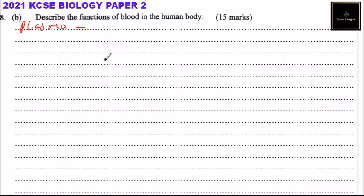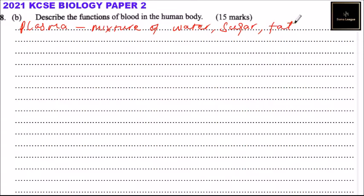Plasma is the liquid component of blood. It is a mixture of water, sugar, fat, protein, and salts.